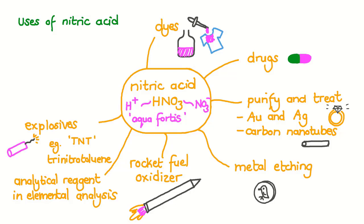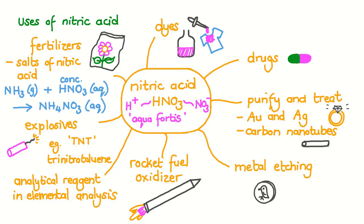Nitric acid is also used in the manufacture of explosives. Perhaps you've heard of TNT or trinitrotoluene. This substance, along with nitroglycerin, are the main components of dynamite. Perhaps one of the most important uses of nitric acid is in the production of fertilizers. Many fertilizers are salts of nitric acid. This equation shows the production of the fertilizer component ammonium nitrate. Ammonia and concentrated nitric acid undergo a combination reaction to produce this fertilizer product.